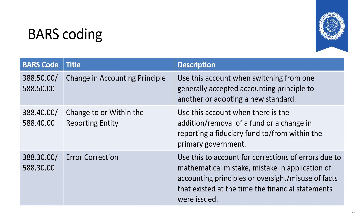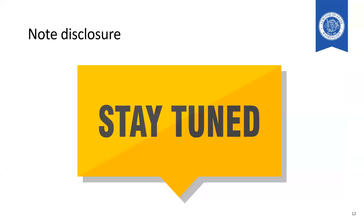We will have one BARS code for a change in accounting principle, a different one for changes to or within the reporting entity, and an additional one for an error correction. There will also be note disclosures required with this new accounting and reporting. Just to give you a little preview, there will be a new narrative requirement as well as a display requirement for your note disclosure.